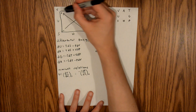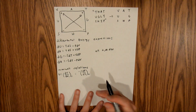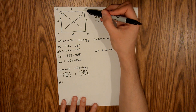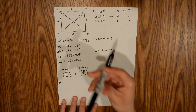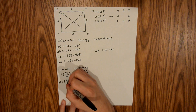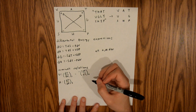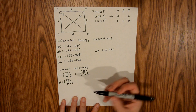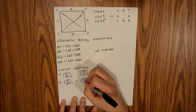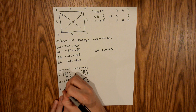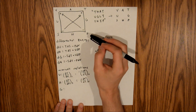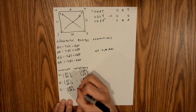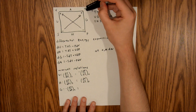Now for enthalpy, starting with non-natural variables: dT, dP at constant S equals dV, dS at constant P. Moving on to Gibbs free energy: negative dS, dP at constant T equals dV, dT at constant P.